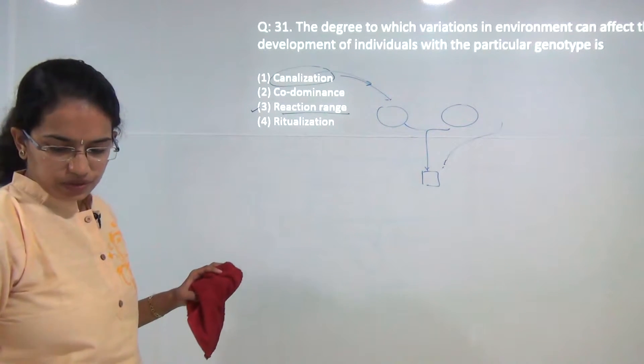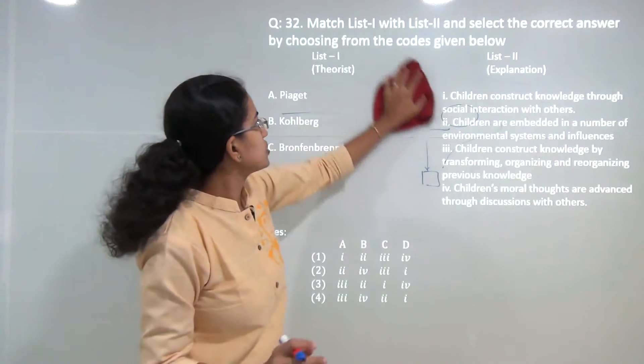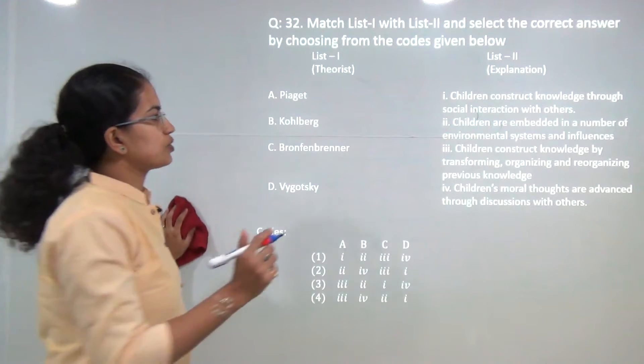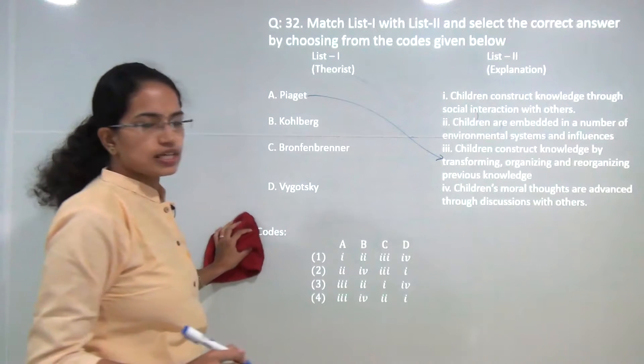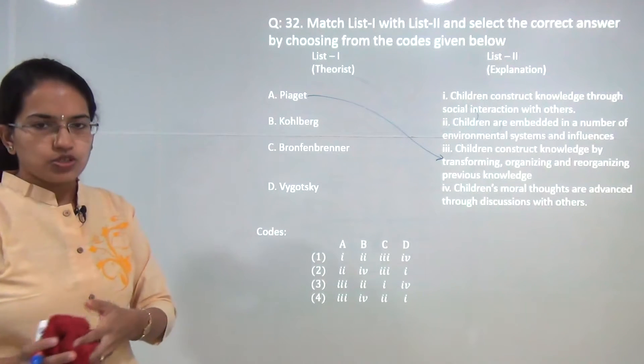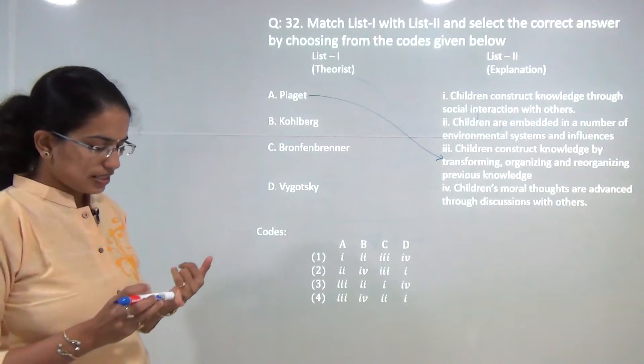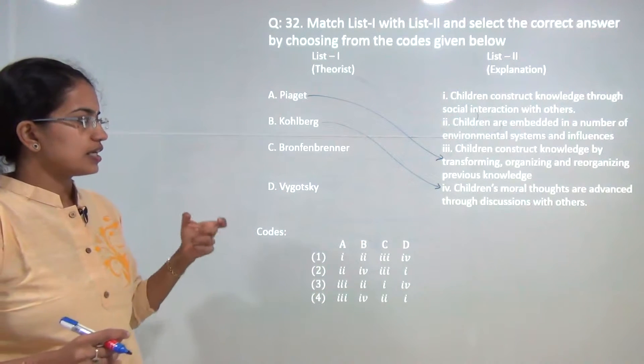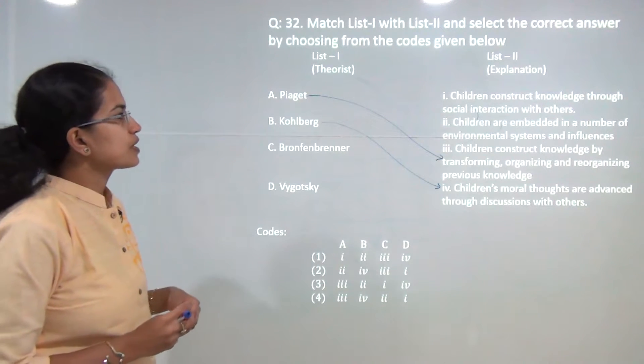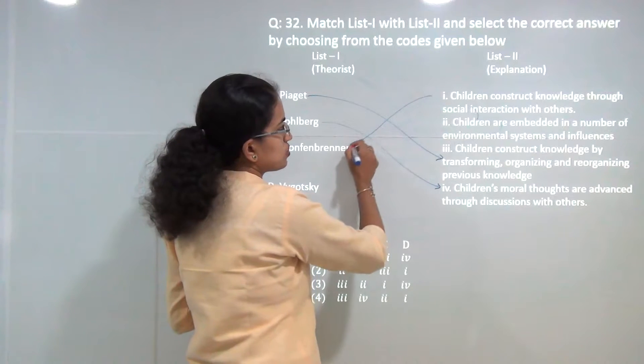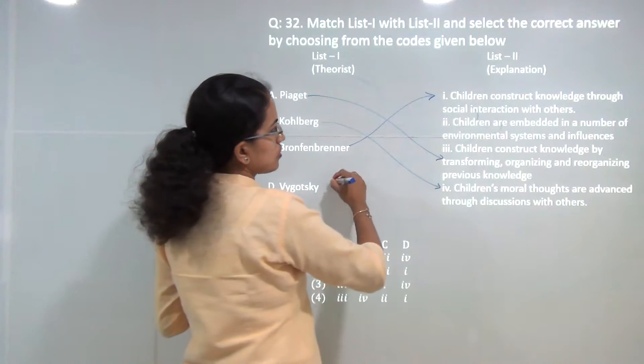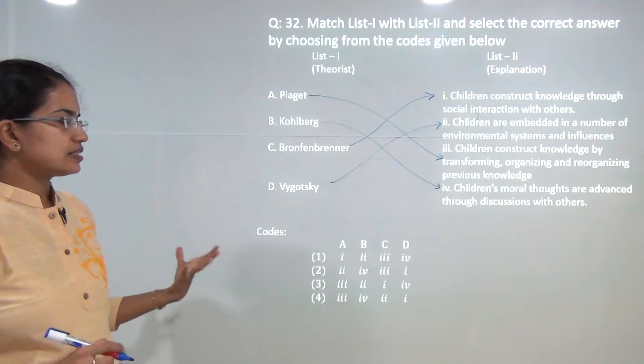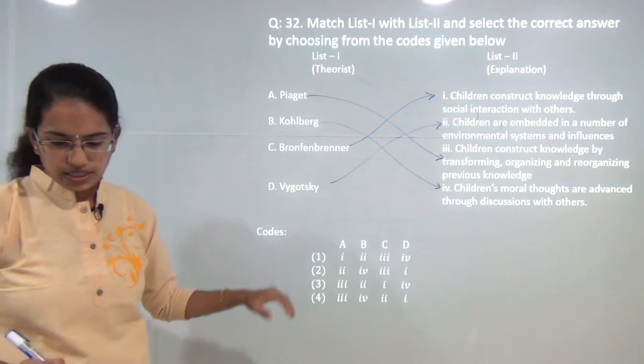You have to match the theories and the explanations given by various scholars. Piaget talked about the transforming, organizing, and reorganizing of previous knowledge in children. Kohlberg talked about moral development, so children's moral thoughts are advanced through discussions with others. Bonfire talked about constructive knowledge by social interaction. And finally, Vygotsky talked about how children are embedded in environmental systems and the environmental systems influence the development of an individual.